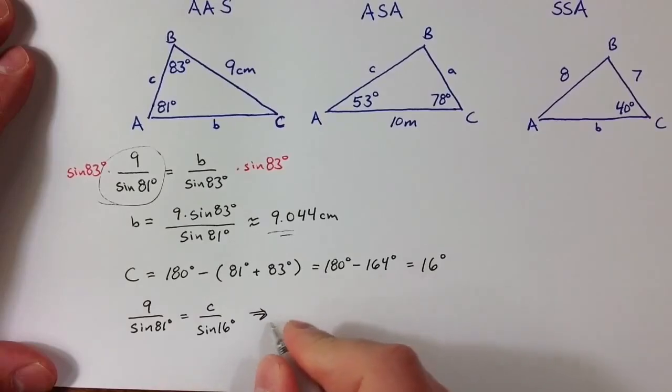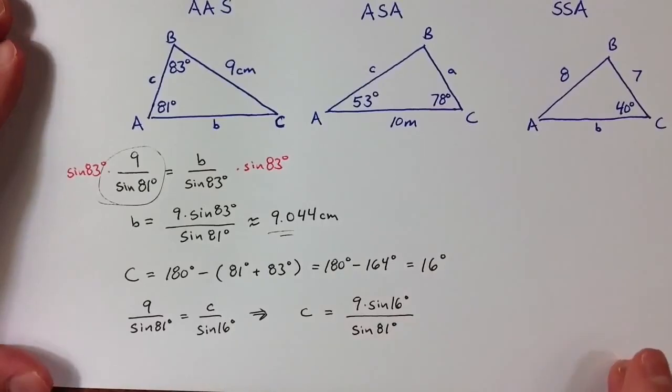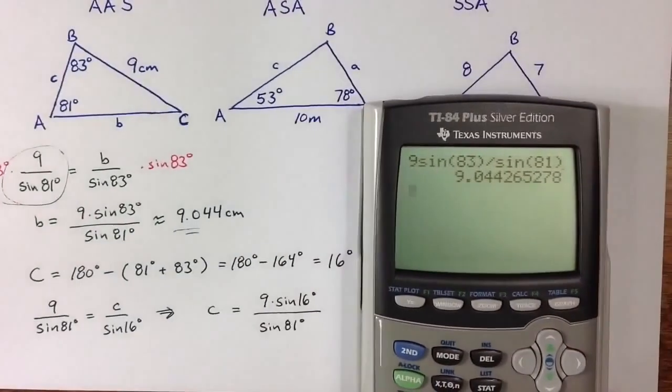And then multiplying sine of 16 degrees to the other side, we get that c equals 9 times sine of 16 degrees divided by sine of 81 degrees.